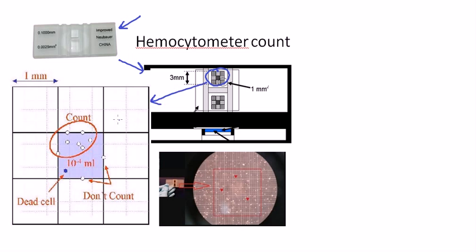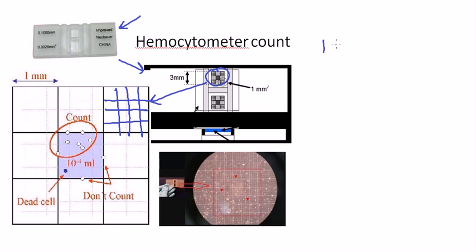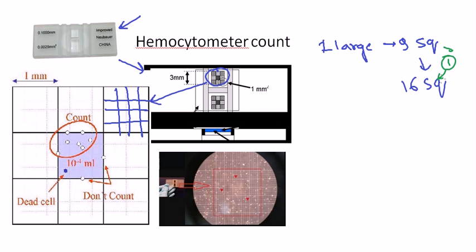If we zoom into that particular area, each side of the hemocytometer is the same, so once you know one side you know the other. When you zoom in, each side is made up of three large squares on three sides — so nine squares completely. Now each of those nine squares is further divided into sixteen squares. So we begin with one large square, divided into nine, and each of those nine is divided into sixteen squares.